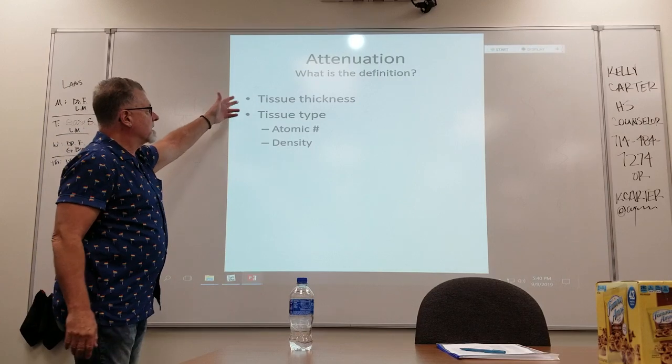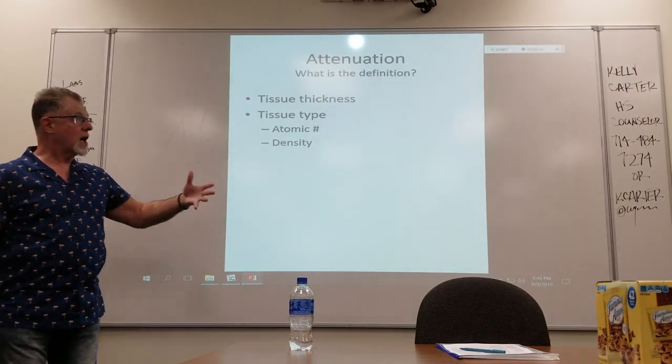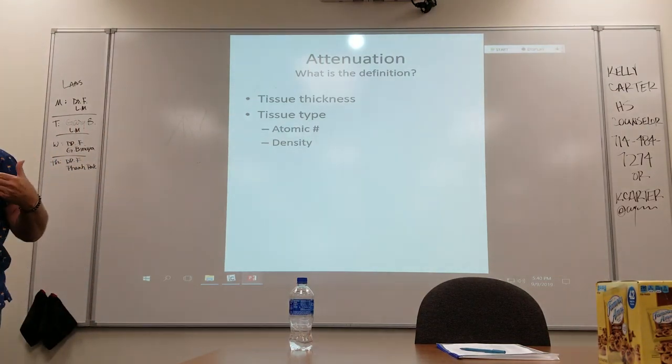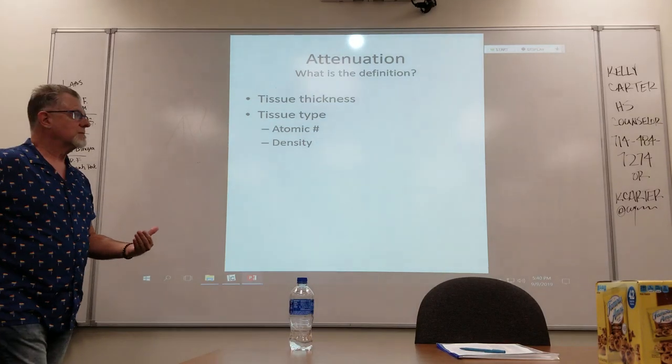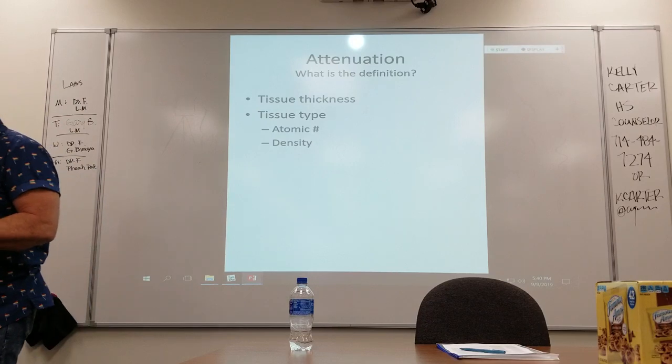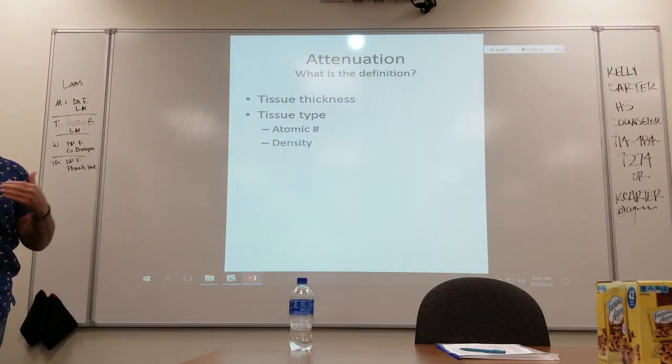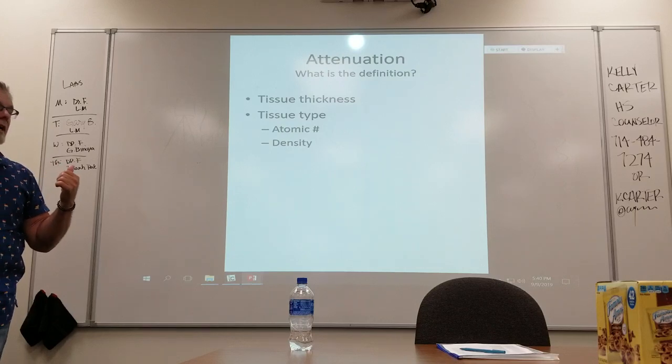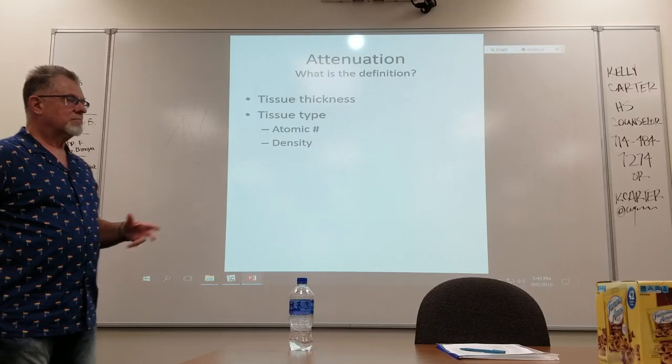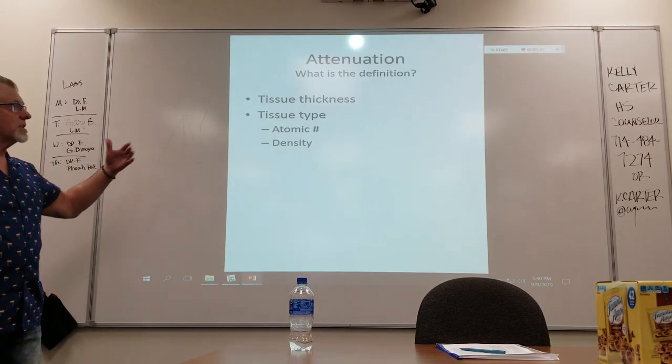Attenuation depends on tissue thickness and tissue type, atomic number and density. Obviously bone is going to attenuate more than soft tissue, which is going to attenuate more than fat. This is the whole premise behind CT and why you have different CT numbers for white tissue in the brain, bone, lung, all those types of things. Those are all different attenuations.